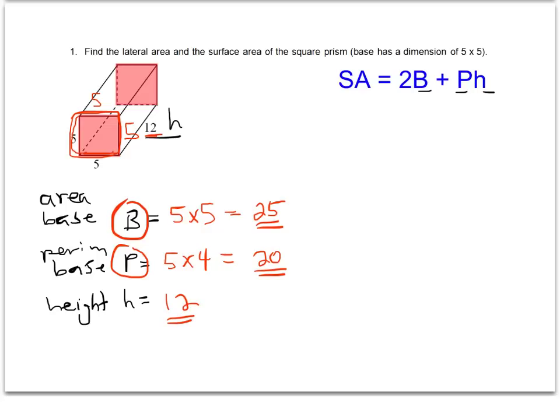And now that I have all three of those values to plug in, it will be a lot easier to just go ahead and plug them in. 2 times my base, 2 times 25, plus my perimeter times my height.